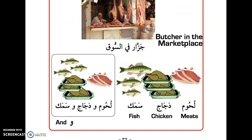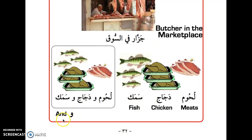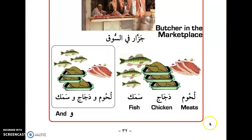As promised, let's review the واو — the 'and' connector. Let's review: لحوم (meat), دجاج (chicken), سمك (fish). Now with واو: لحوم ودجاج وسمك — meat and chicken and fish.